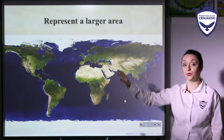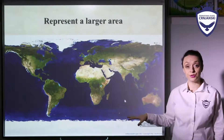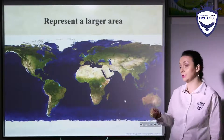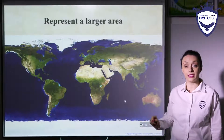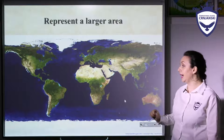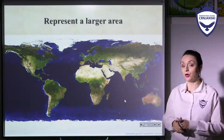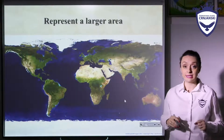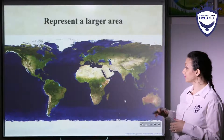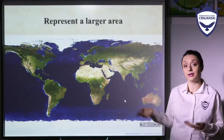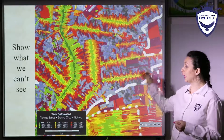The blue color is used for water — oceans, seas, and rivers. The white color is used for the North and South Pole. The yellowish part can be representative of deserts or places with a small amount of forest. This is how we represent a larger area with the help of a map, or show what we can't see with our eyes alone.